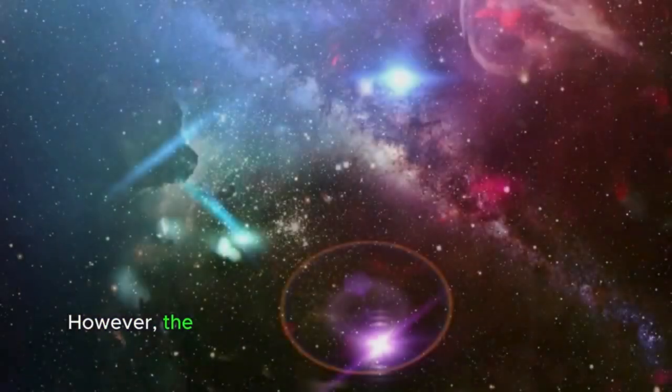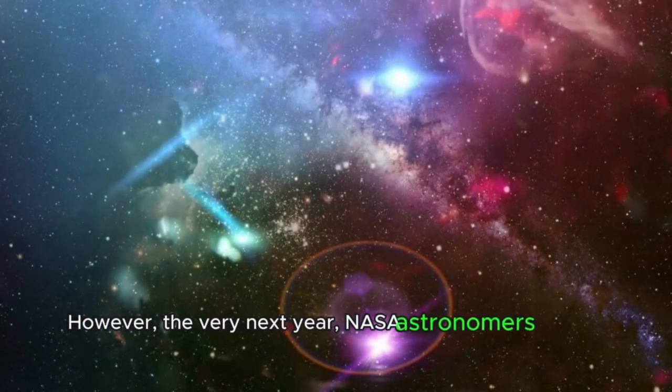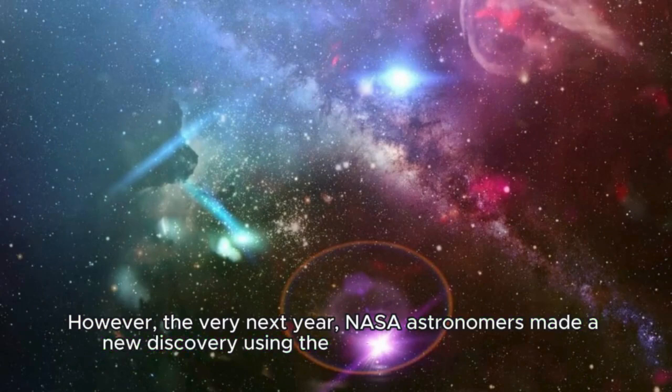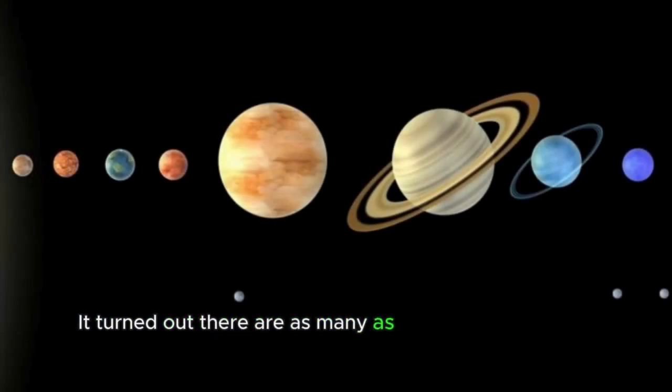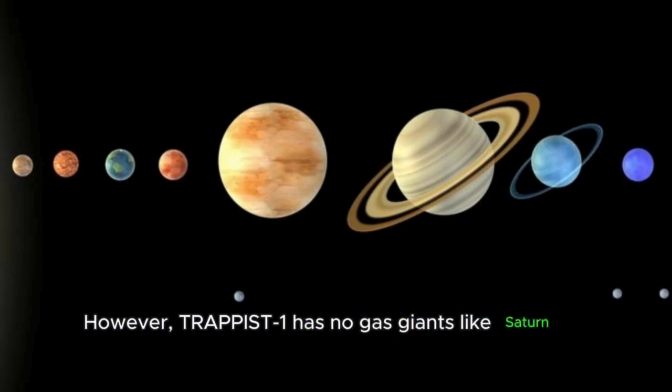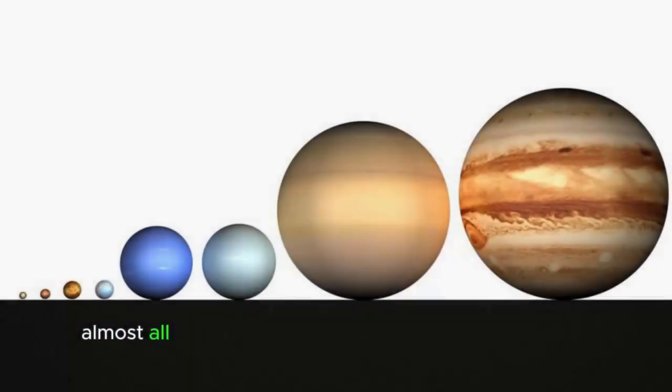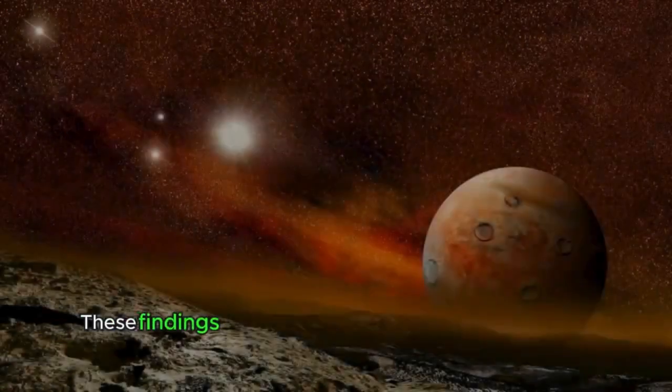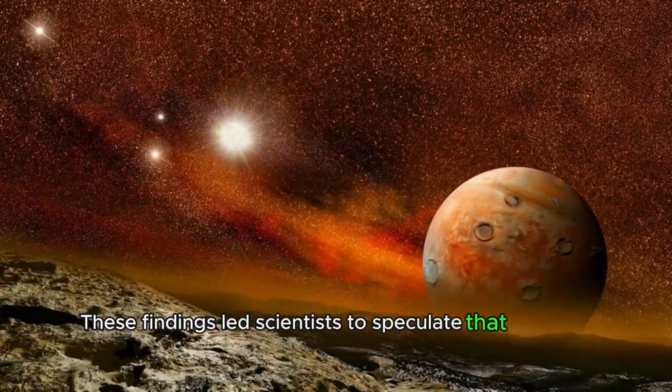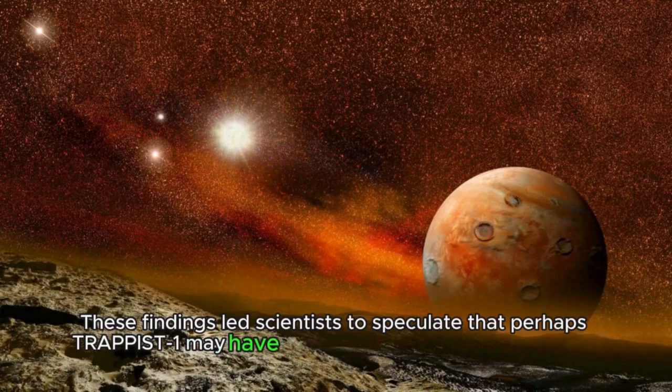However, the very next year, NASA astronomers made a new discovery using the Spitzer Space Telescope. It turned out there are as many as seven planets in this planetary system. However, TRAPPIST-1 has no gas giants like Saturn or Jupiter. Almost all of its planets are structurally similar to Earth. These findings led scientists to speculate that perhaps TRAPPIST-1 may have the potential for life to exist there.